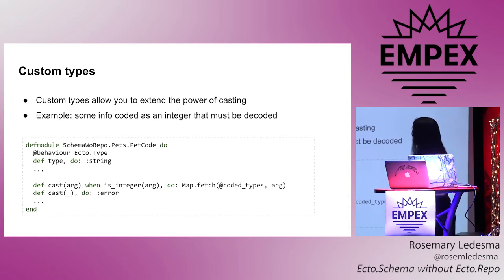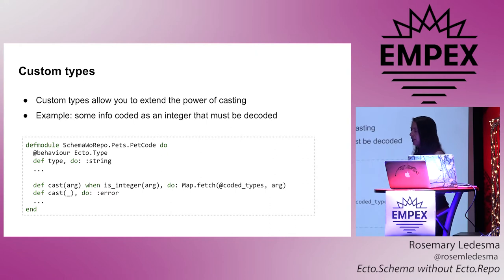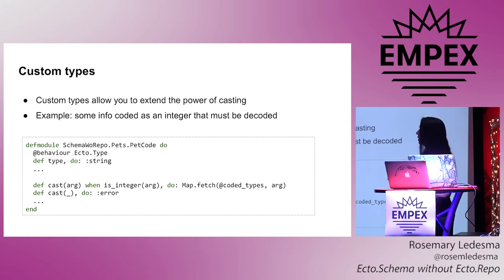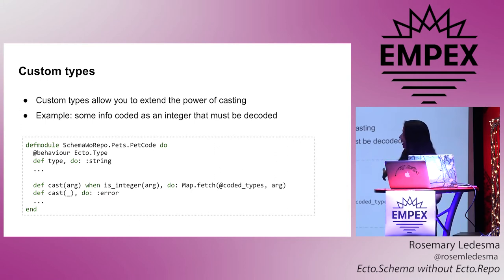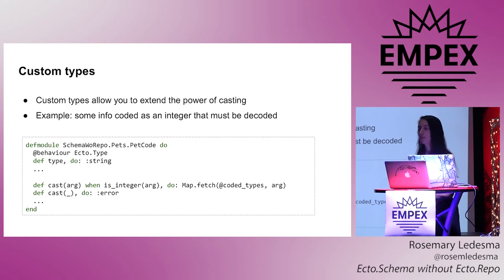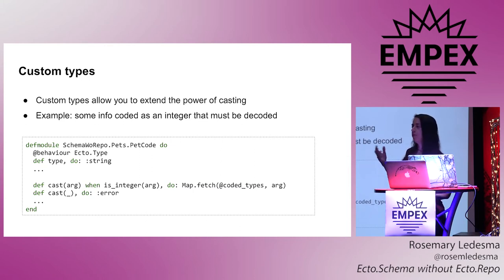Another interesting thing you might want to do is implement a custom type — that's something I did in real life. An example I had was data coming from a legacy system that was encoded as an integer but wasn't really meant to be one. You can bridge that gap by describing your own type, which is a behavior. You just need to implement a cast function, plus load and dump. Cast returns either an error atom if there's a problem, or the successfully cast data. In this particular example, I'm looking up in a table to see what that integer means. Whatever logic you need, you can put in there — it's pretty powerful.